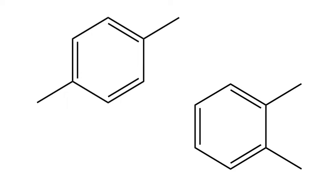Here I've got 1,4-dimethylbenzene and also 1,2-dimethylbenzene. For the 1,4-dimethylbenzene, we've got a line of symmetry, and what that means is the two CH3s on either side are going to be equivalent to each other. They're absolutely indistinguishable from each other, so they're just going to give one peak.